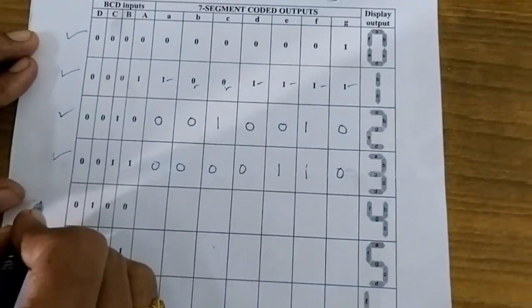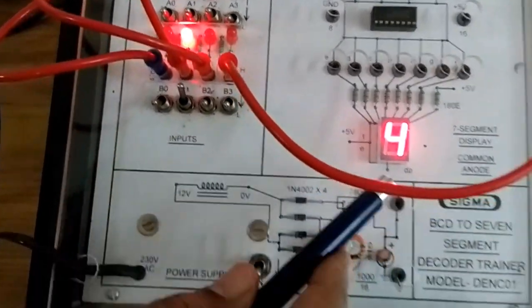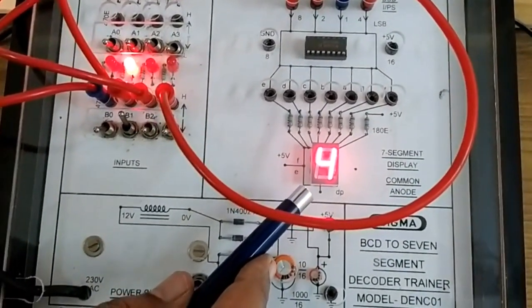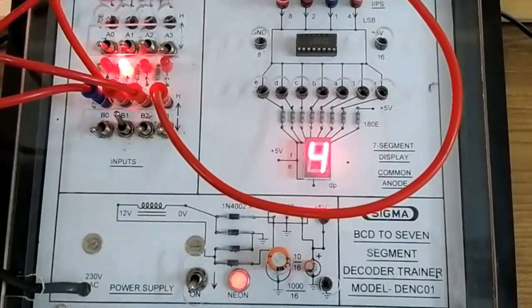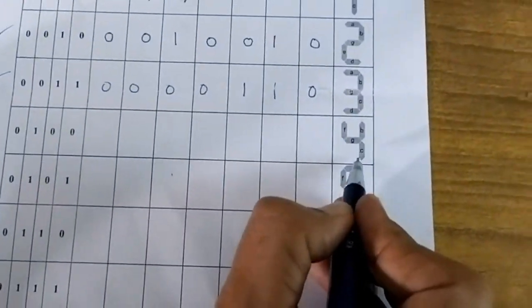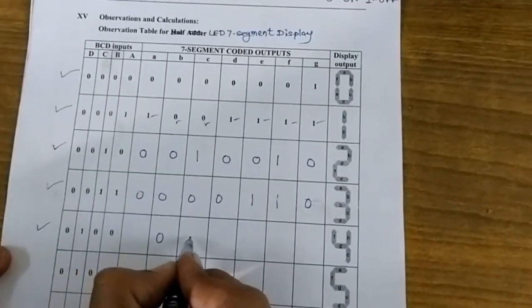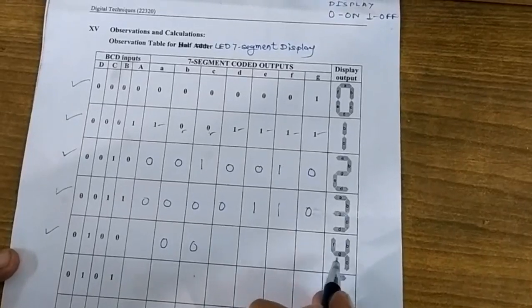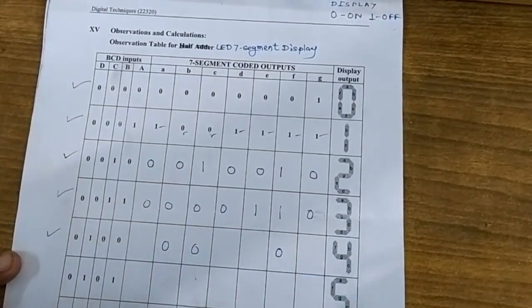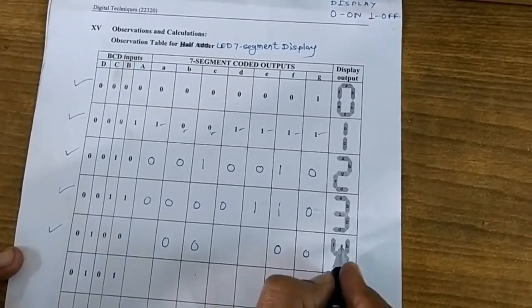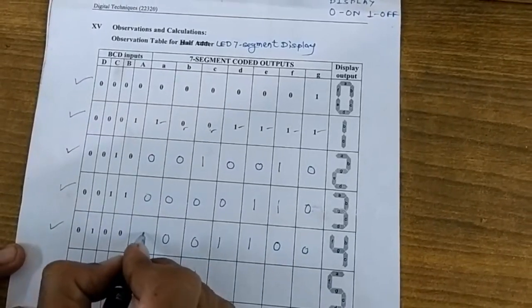The next BCD input is 0 1 0 0, and the output displayed is number 4. To display 4, segments B, C, F, and G must be on, so they are at logic 0. The remaining segments must be off, so they are at logic 1.